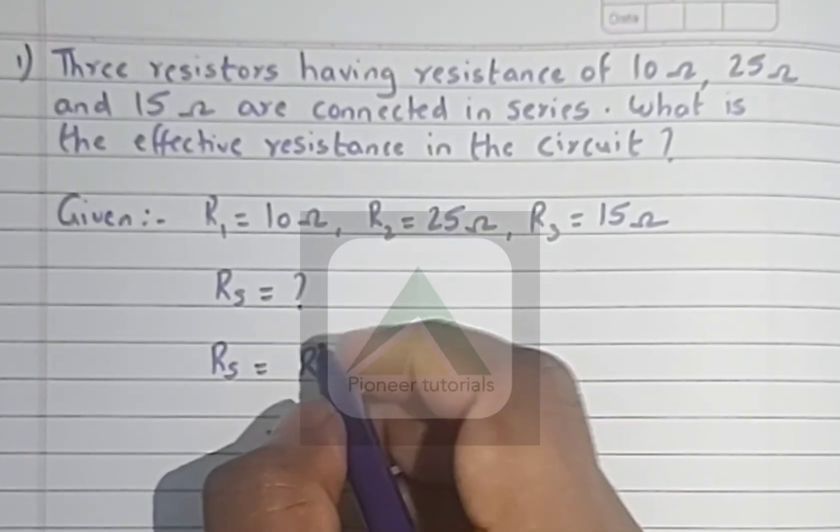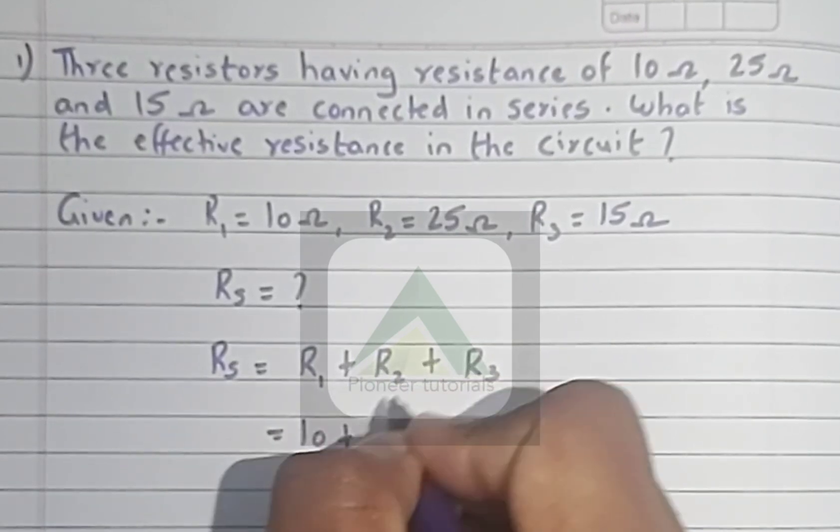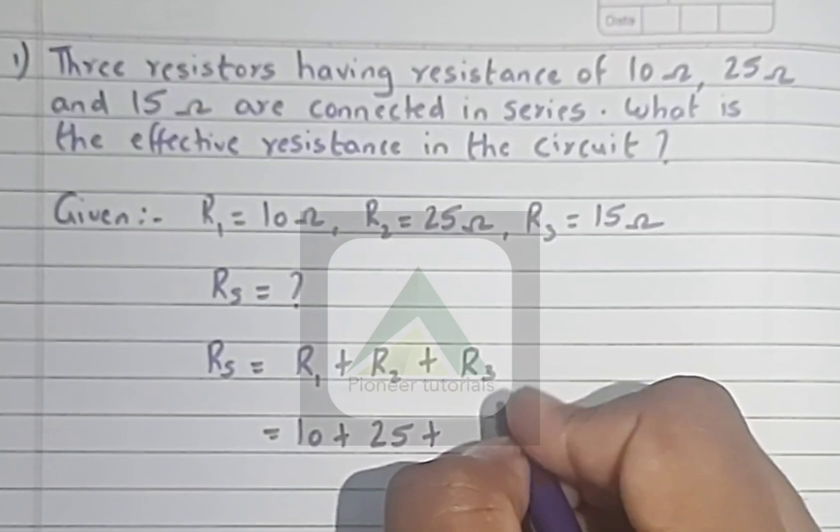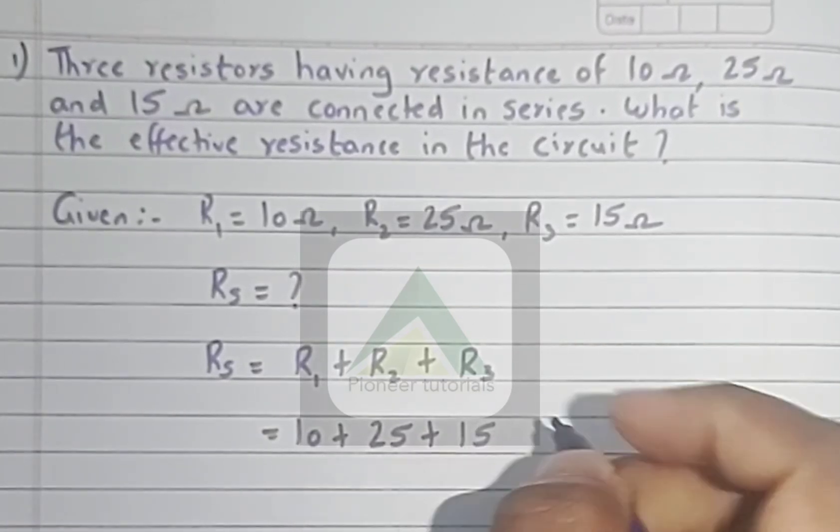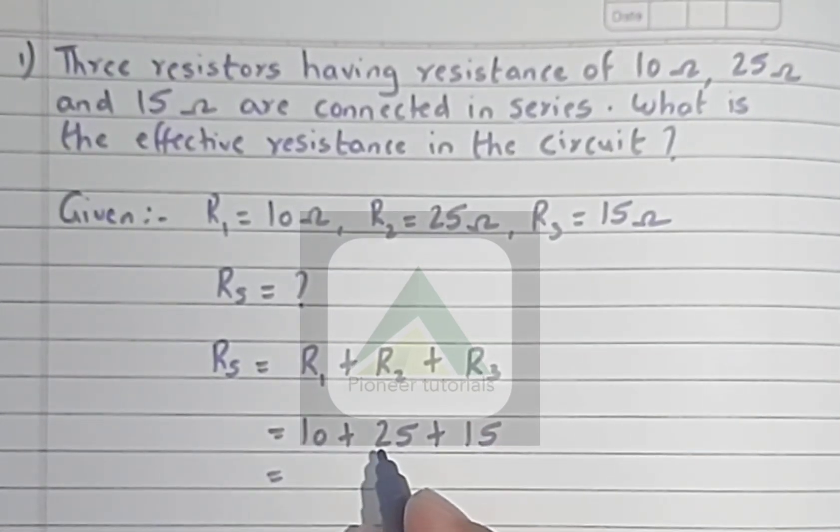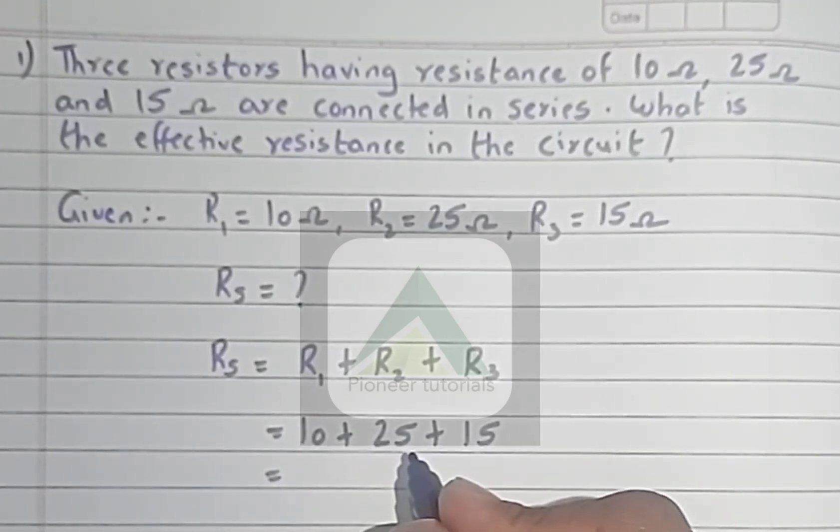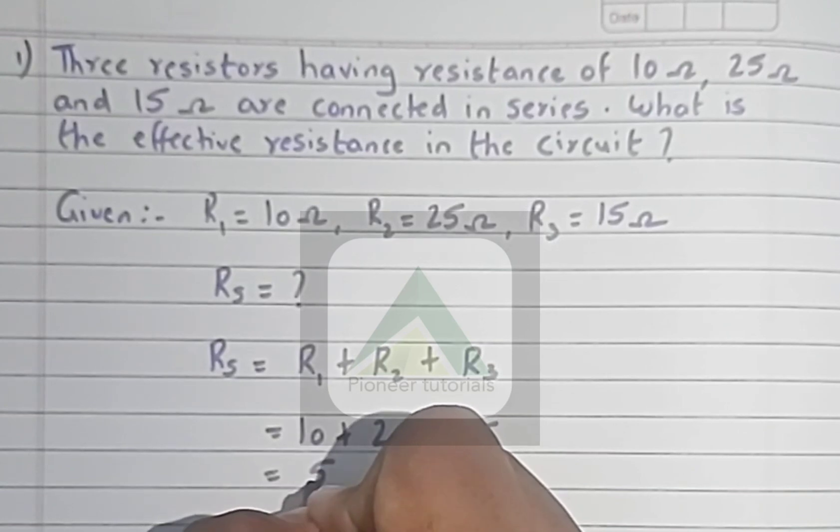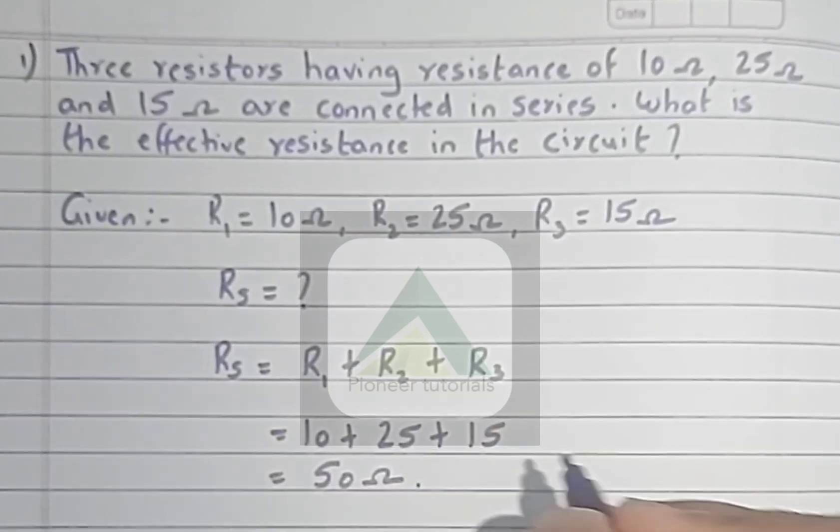So what is the value? R1, that is 10. R2, 25. And R3, 15. So add it: 10 plus 25 equals 35. 35 plus 15 equals 50. So it is 50 ohm.